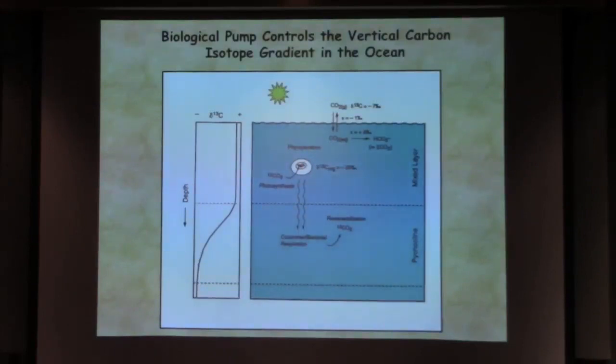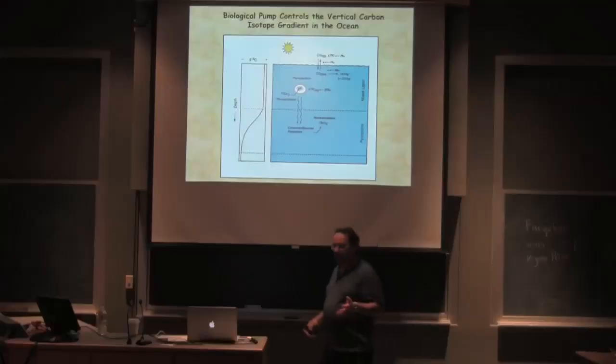They're fractionating the CO2 that they're using for photosynthesis to the tune of about 20 to 25 per mil. So the delta C-13 of organic matter that's produced in the surface ocean is around minus 20 per mil.